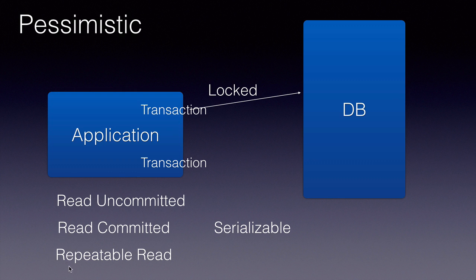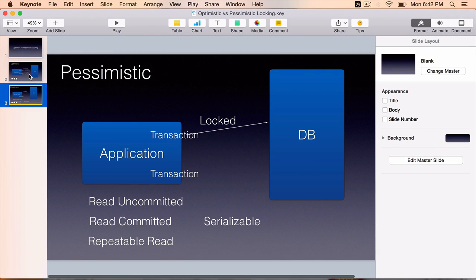Read committed and repeatable read are what we use frequently when we do pessimistic locking. I will do a lecture or a video on isolation levels specifically. For now, optimistic locking and pessimistic locking are two different ways in which we can control how transactions in our application access the data in the database.